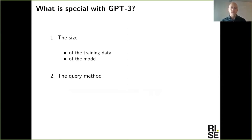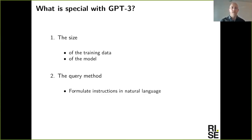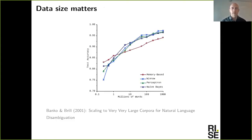In the standard setting, you take a language model to produce representations and then add a classification layer on top trained to perform some NLP task. But that's not how GPT-3 is used. Instead, they formulate instructions in natural language and use the generative abilities of this model to solve the problem as a sequence prediction task — an interesting way to use language models.